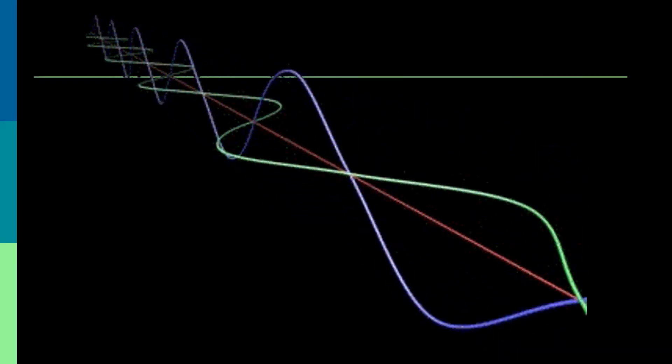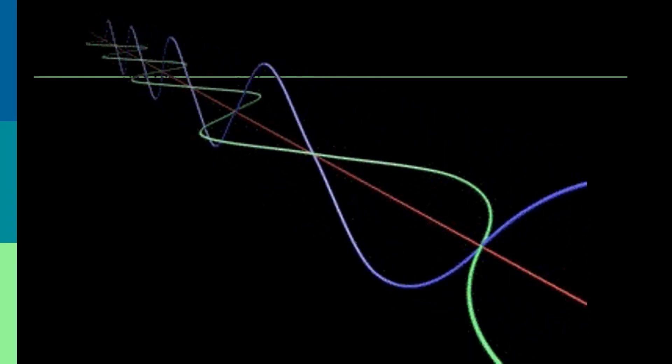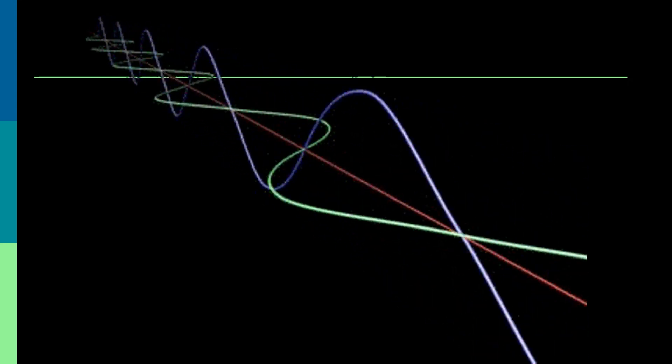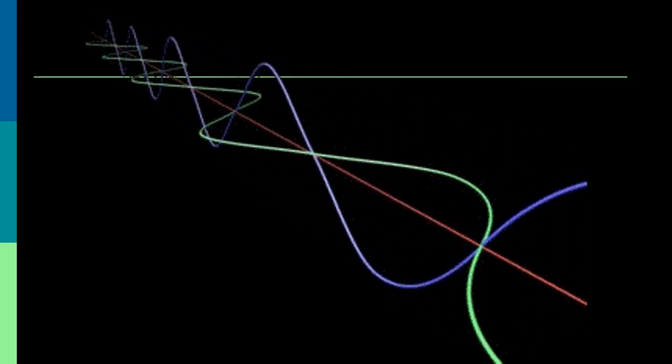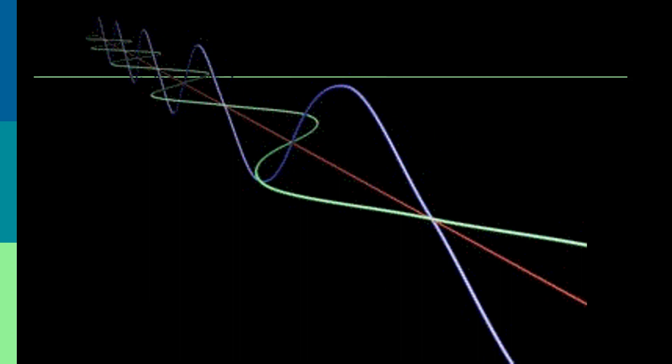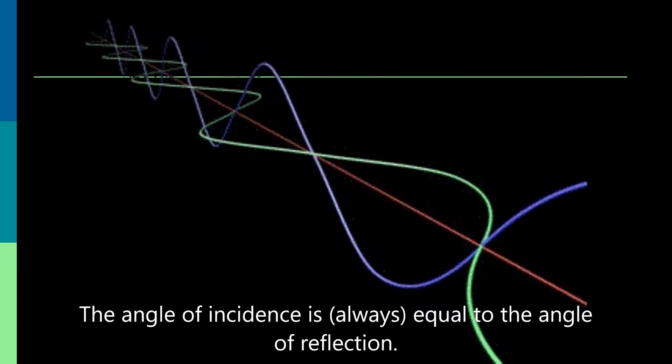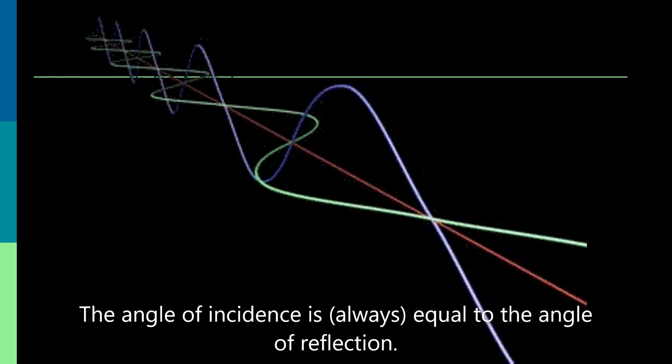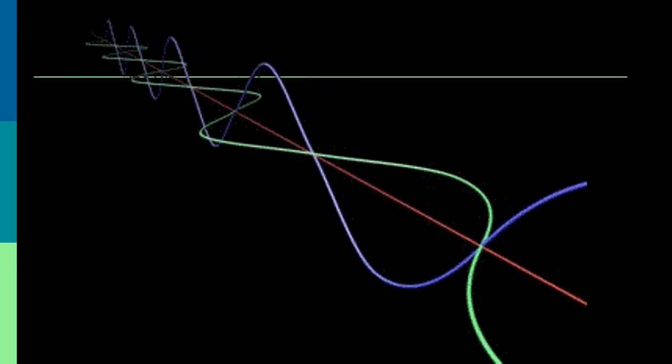To sum up today's lesson: reflection is the bouncing of light when it hits a surface. The first law of reflection states that the angle of incidence is always equal to the angle of reflection. If there are any questions, feel free to leave a comment or send an email. Thank you for watching and listening to this video lesson.